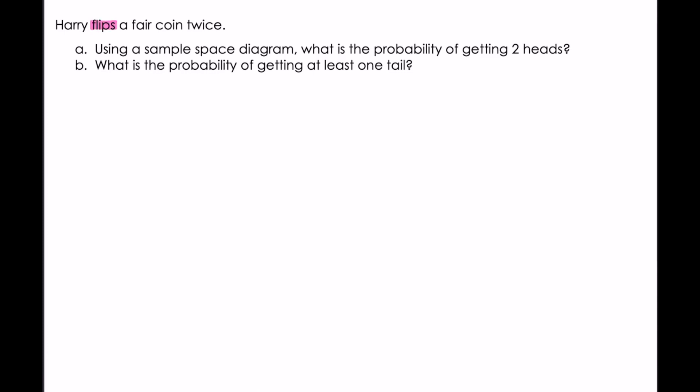Harry flips a fair coin twice, so we're going to understand that Harry is flipping the coin and he's doing it twice. Using a sample space diagram, what is the probability of getting two heads? This sample space diagram is going to help us with our probability — it's just a way of representing probability the same way as a tree diagram. So now we are going to draw our sample space diagram.